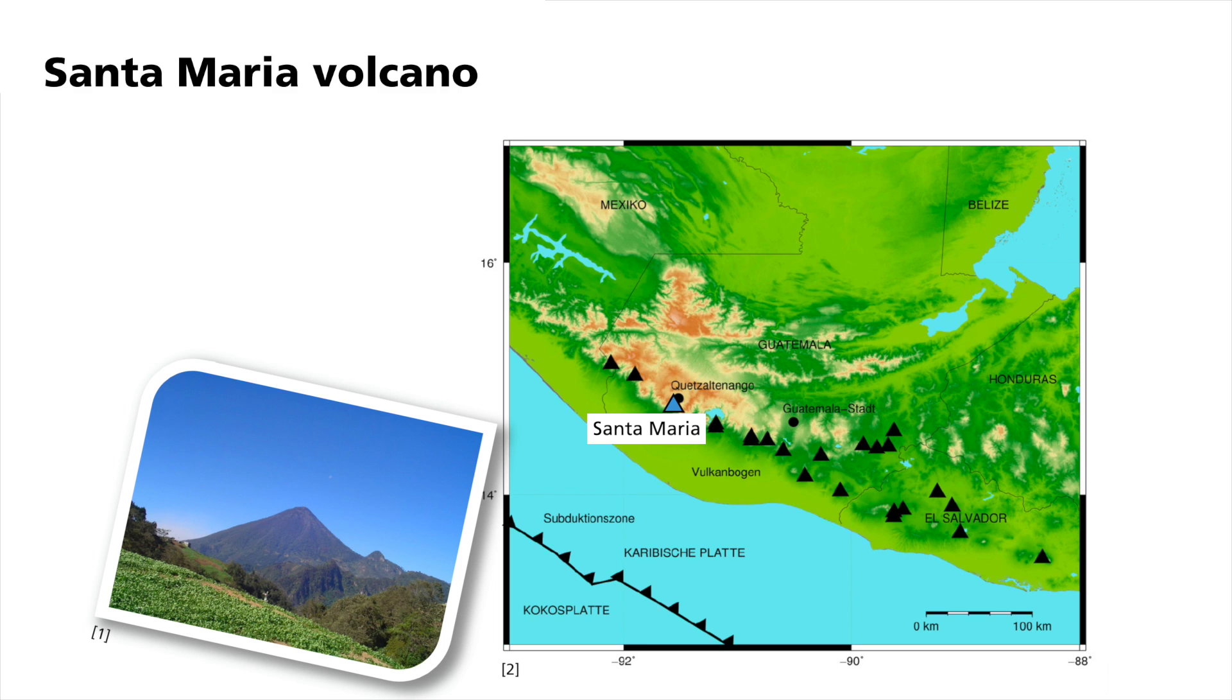The Santa Maria volcano is an active volcano in Guatemala and is part of a mountain range known as the Central American Volcanic Arc. This extends from southern Mexico to Panama and has its origin in the subduction of the Cocos Plate under the Caribbean Plate.